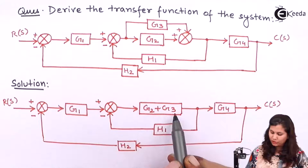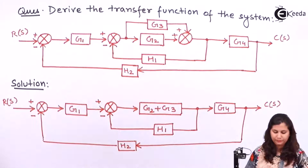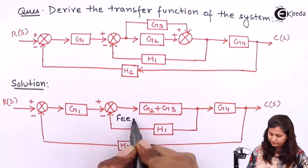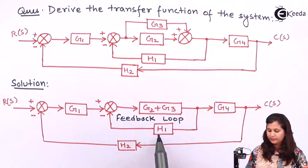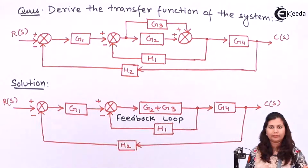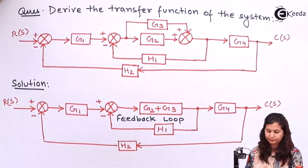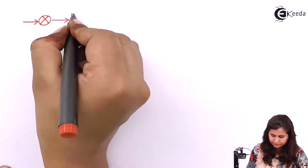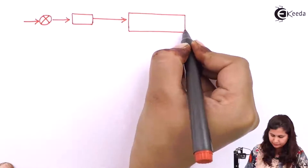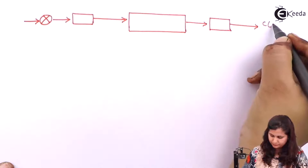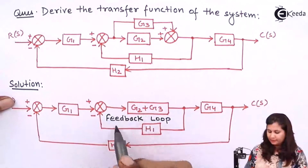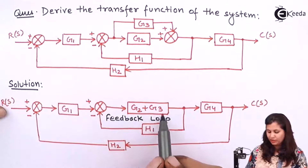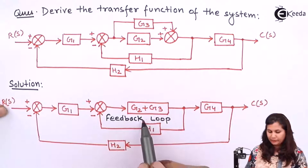Now, if we see G2 plus G3 and H1, they are forming a feedback loop. So if we apply the feedback rule in this loop, then we can reduce this portion of the block diagram. The feedback rule says that the transfer function of the resultant block will be G2 plus G3 upon 1 minus H1 multiplied with G2 plus G3.